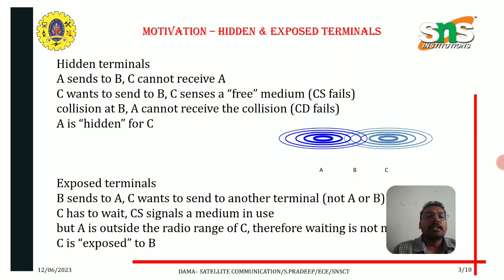Hidden and exposed terminals. In hidden terminals, for example, A sends to B. C cannot receive A. C wants to send to B. C senses a free medium — carrier sense fails. A collision at B occurs. A cannot receive the collision because collision detection fails. A is hidden for C.